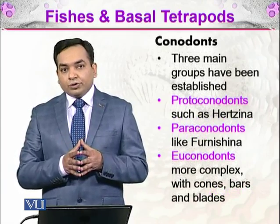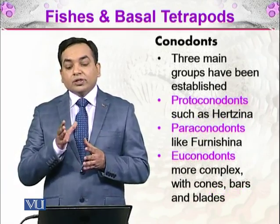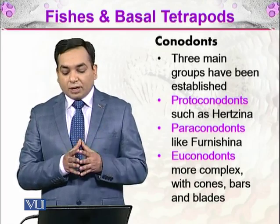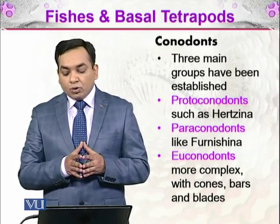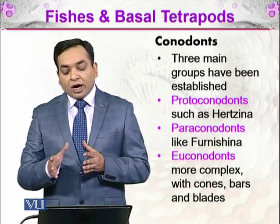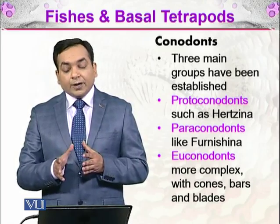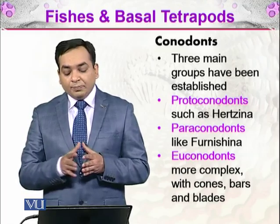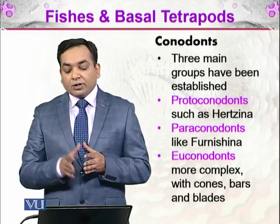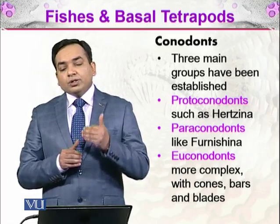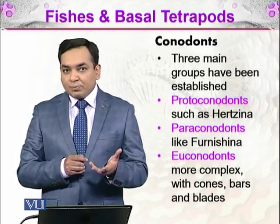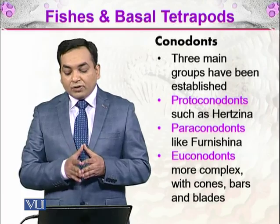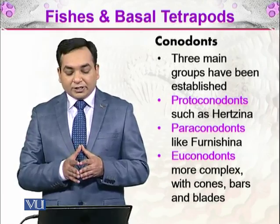Of the conodonts, there are three main groups that have been established. One are the proto-conodonts, such as Herzina. Then there are the paraconodonts, such as Furnishina. And then there are the euconodonts. The first two are much simpler conodonts, but the euconodonts are more complex, with cones, bars, and blades.